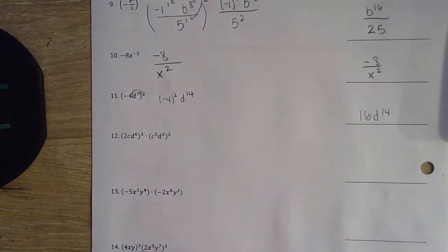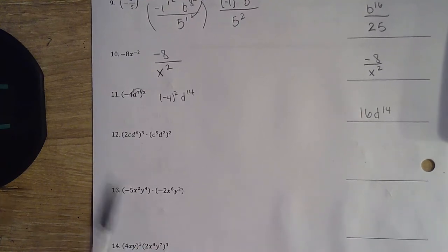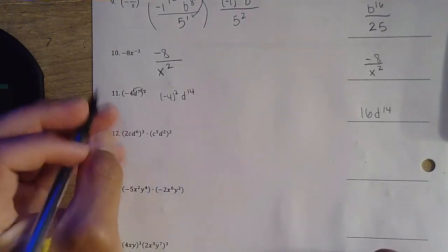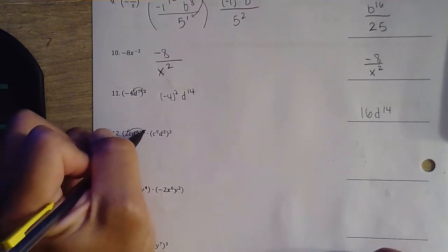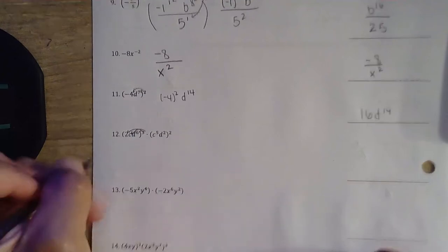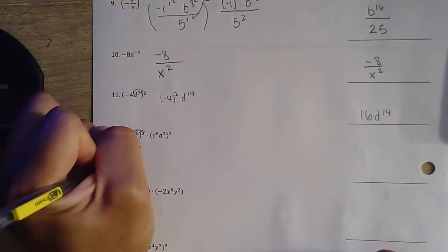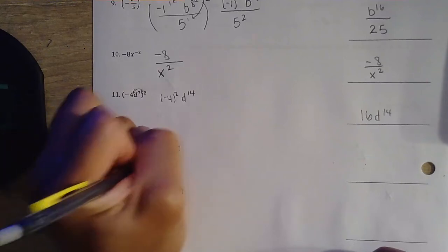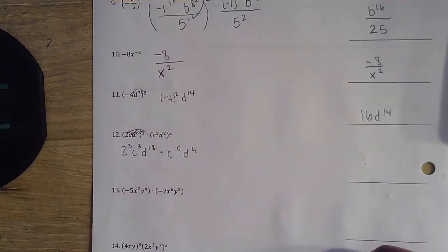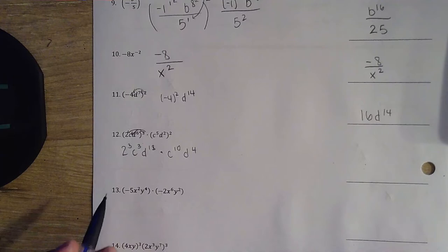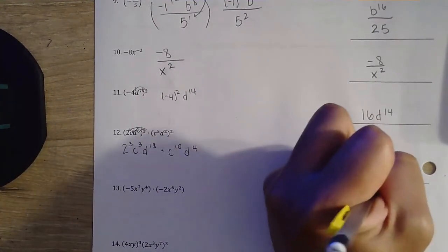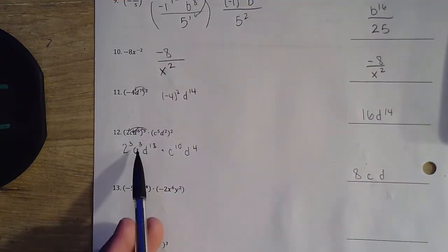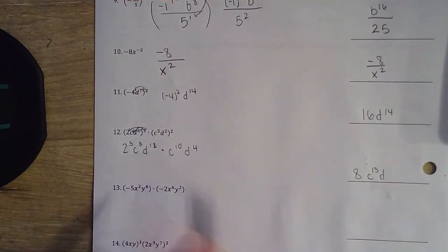Question number 12 — starting to get a little trickier. Try to get rid of your parentheses first. With this 3 exponent, we distribute it to each of these: 2 there, 2 there, and 2 — that's 6. So we're going to have 2 to the 3rd power, c to the 3rd power, d to the 18th power. All of that being multiplied by — distribute that 2 — c to the 10th power, d to the 4th power. 2 to the 3rd power is 8. Then our bases of c and d: 3 plus 10 gives us 13, and 18 plus 4 gives us 22. Final answer: 8c to the 13th, d to the 22nd.